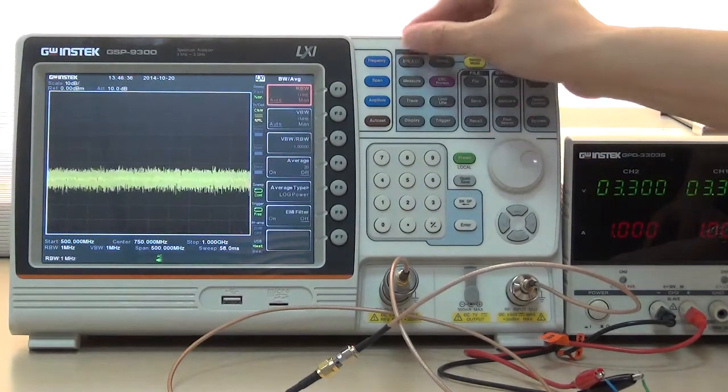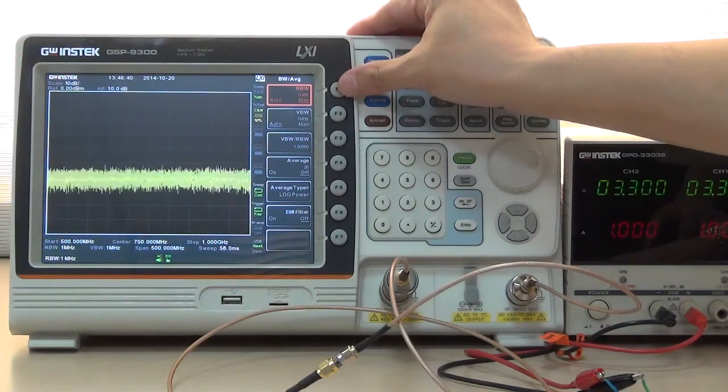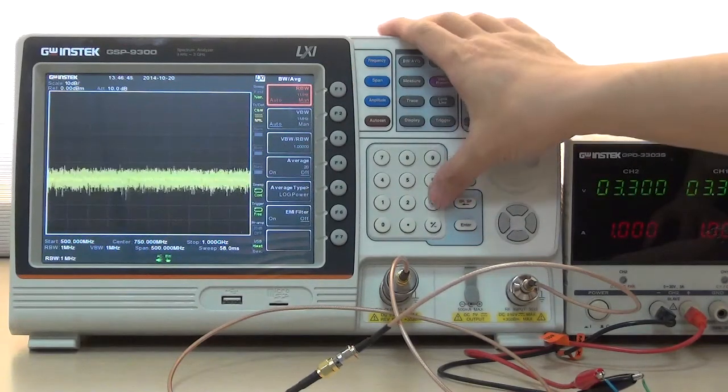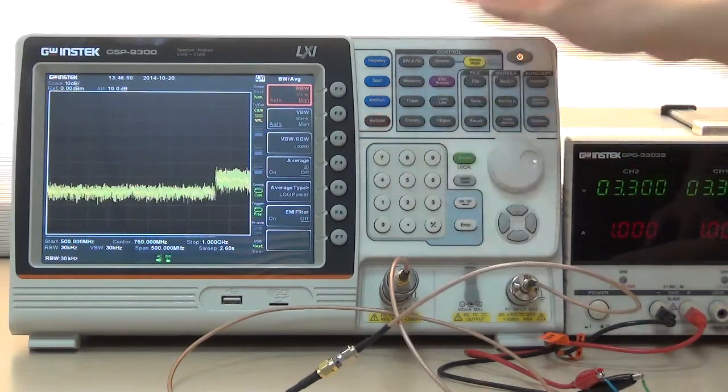Next, press Bandwidth, Average, and F1 to switch to Normal Mode, Manual Mode and input 30 kHz.